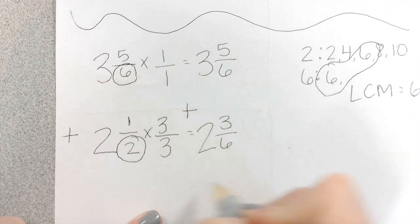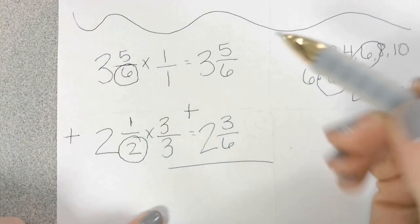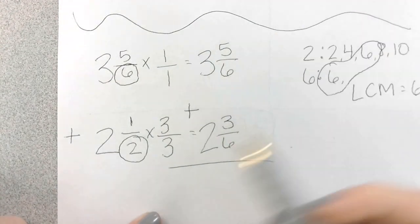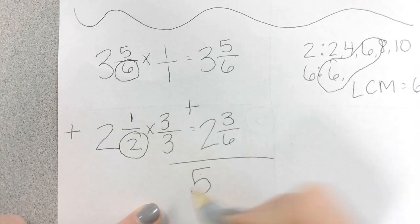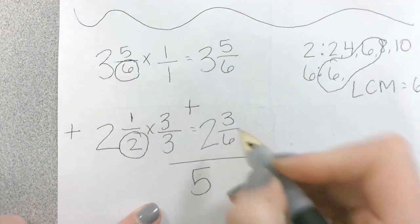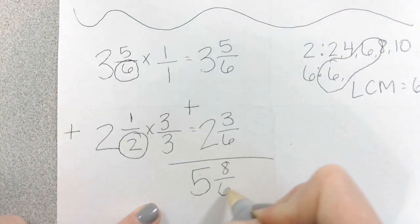And we're adding these together. Okay. Let's add the whole numbers first. 3 plus 2 is? 5. 5. 5 plus 3? 8. 8 over 6.